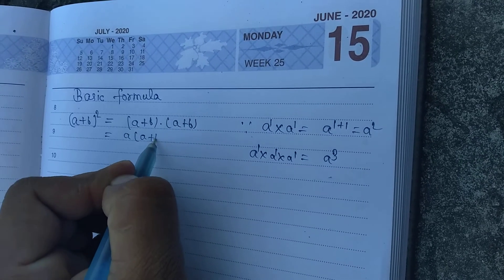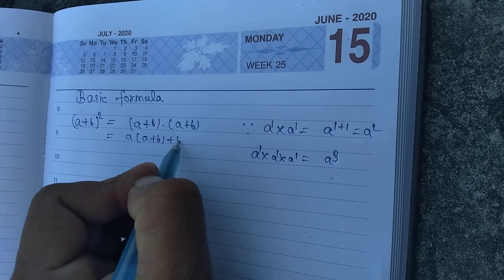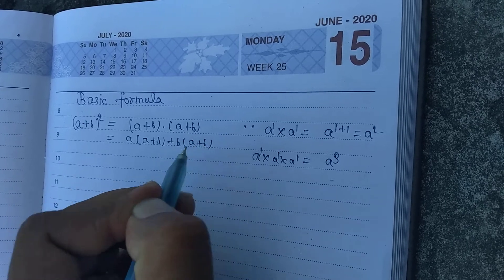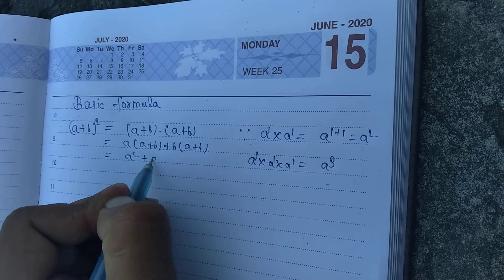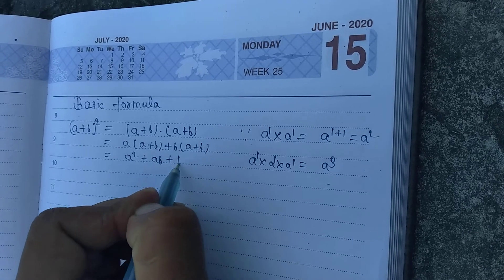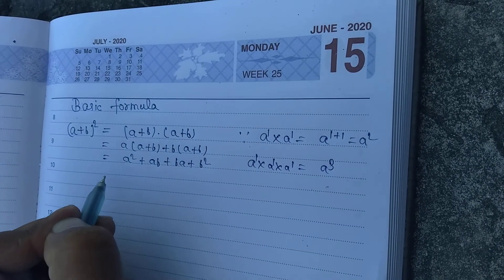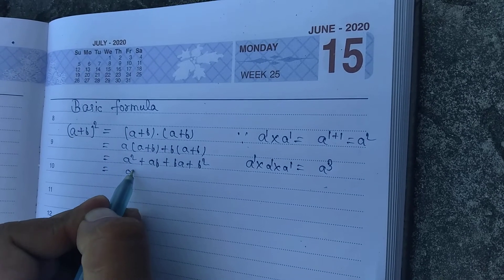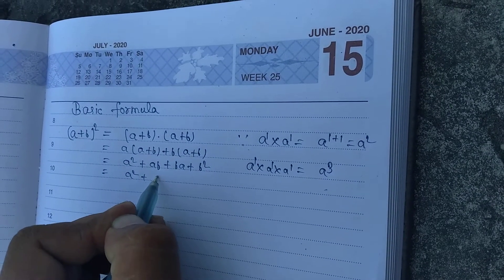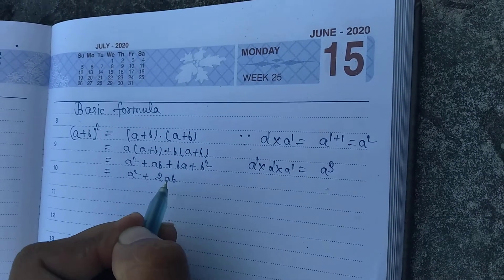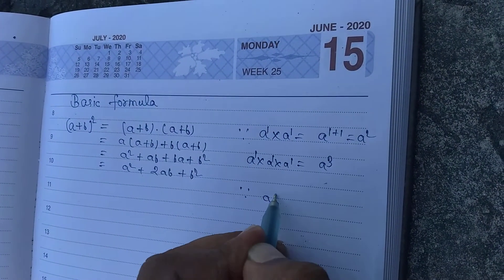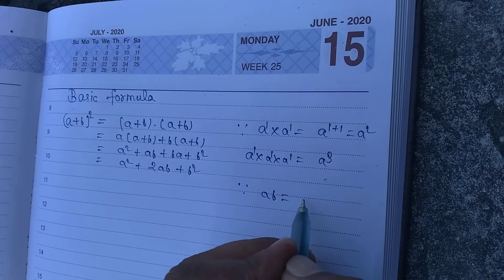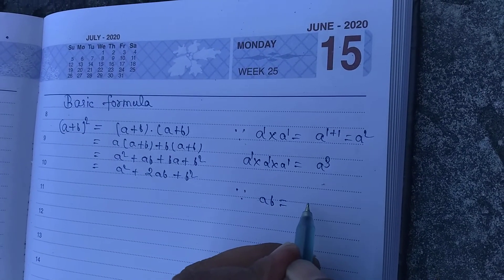Expanding: a plus b, a plus b gives us a square, a b, plus b a, plus b square. This equals a square plus 2 a b plus b square. Note that a b is equal to b a.